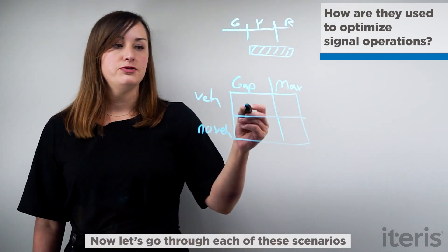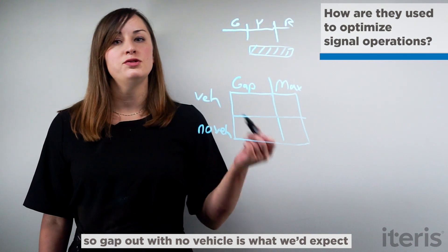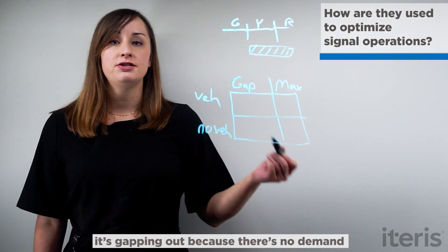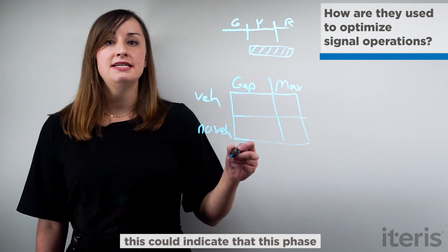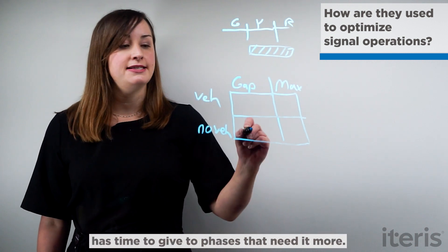And let's go through each of these scenarios. So a gap out with no vehicle is what we'd expect. It's gapping out because there's no demand. But if you see this a lot over time, this could indicate that this phase has time to give to phases that need it more.